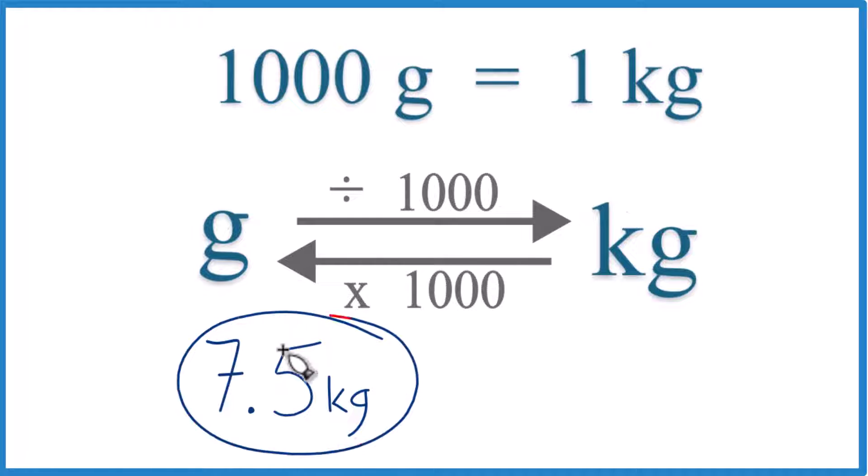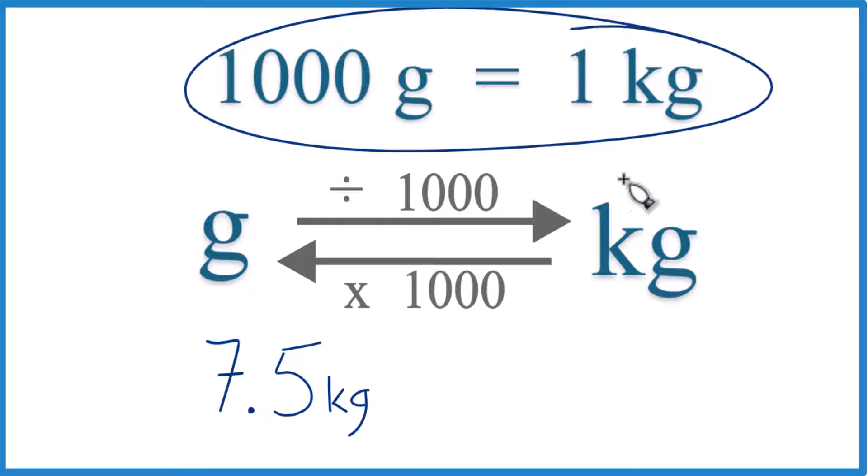Let's convert 7.5 kilograms to grams. Here's how you can do that. You need to know that 1,000 grams equal 1 kilogram. That's what we call a conversion factor, and we need it if we're going from grams to kilograms or kilograms to grams.